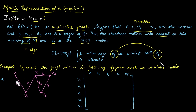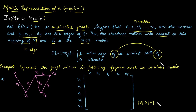For example, for this graph, first we need to calculate the number of vertices. The total number of vertices is 5. Now calculate the number of edges — that is again 5. So the matrix order is equal to the cardinality of the vertex set times the cardinality of the edge set. Here the number of vertices is 5, so the matrix will be 5 cross 5.